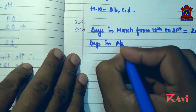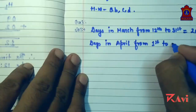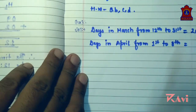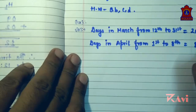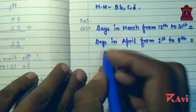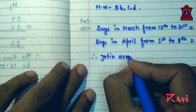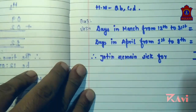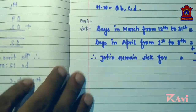Days in April from 1st to 8th — because he was ill up to 8th, he recovered on 9th so he was not ill on 9th. From 1st to 8th is 8 days. Therefore, Jatin remained sick for 20 plus 8 equals 28 days.